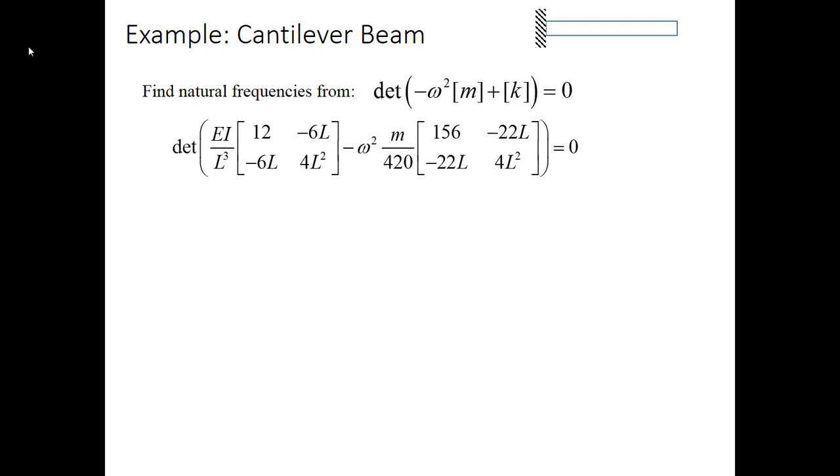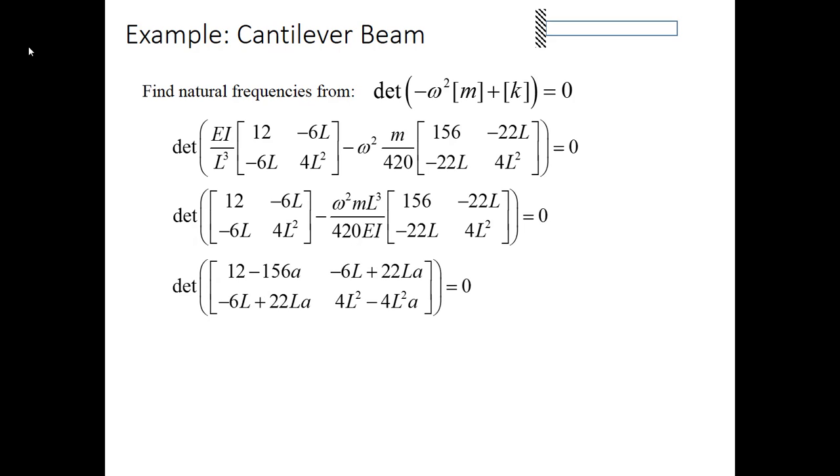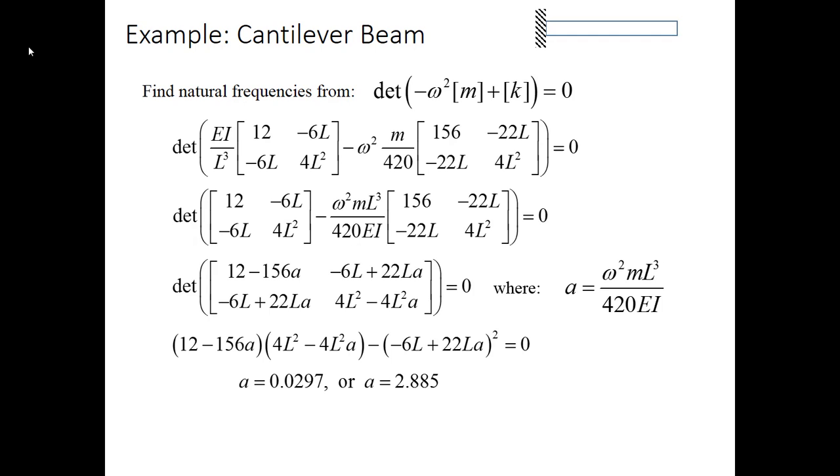So we're solving this equation. We resolved it into this set of two by two matrices. And then what I'm going to do is lump the terms together with the right-hand matrix and then make a substitution where I'm defining an A variable, A being omega squared ML cubed over 420EI. So I'm basically doing a variable substitution so that it becomes easier to solve. Solve this determinant, pretty straightforward. It gives me this quadratic equation in A. And then when I solve that quadratic equation in A, I get two solutions. I get two solutions here because this is a problem that only has two degrees of freedom. So I will only have two possible solutions to the system. The more degrees of freedom you have, the more potential natural frequencies you'll obtain.